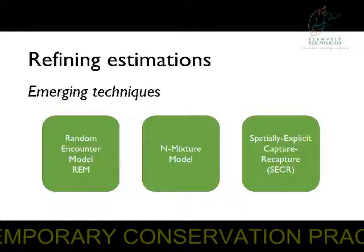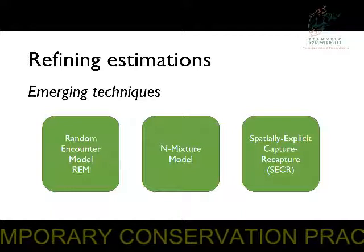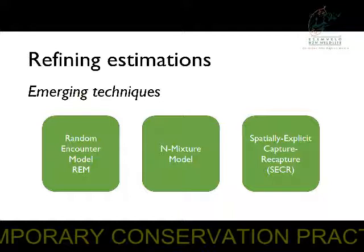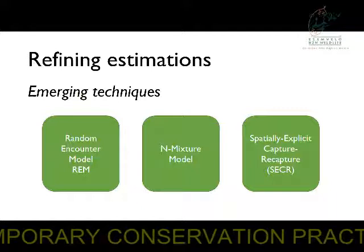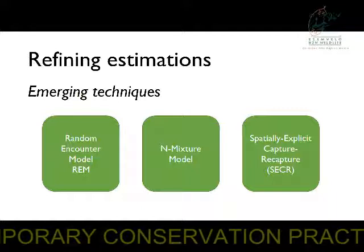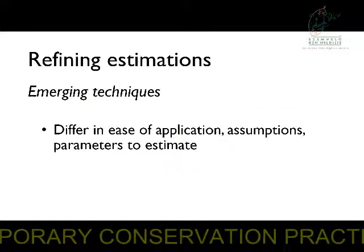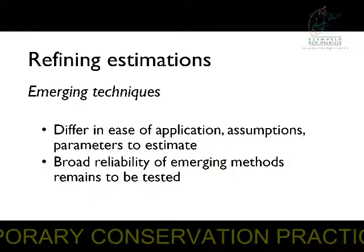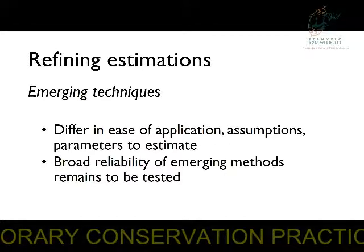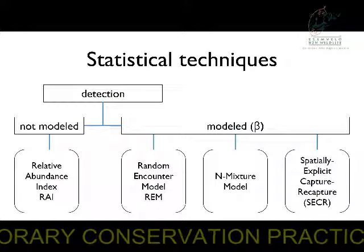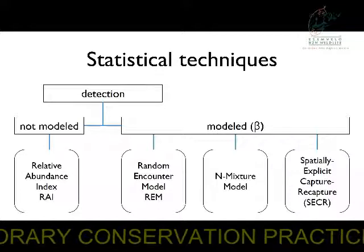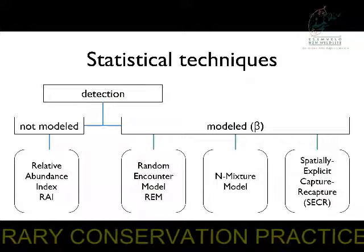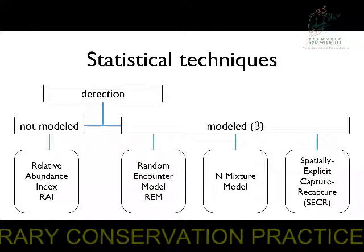So I hope you can see that even simple metrics work with enough data. However, there are these emerging estimation techniques for unmarked individuals that take into account additional information from the system, which improve your estimates and produce abundance figures with less time and effort. I'm going to talk about three of them today just briefly. They differ in their ease of application, the assumptions of these models, and the types of data you have to collect to run them. The reliability of these methods still needs to be tested in many systems, and this is something we're working on right now. I just wanted to give you a taste of what is possible in terms of these more complex estimators of abundance.